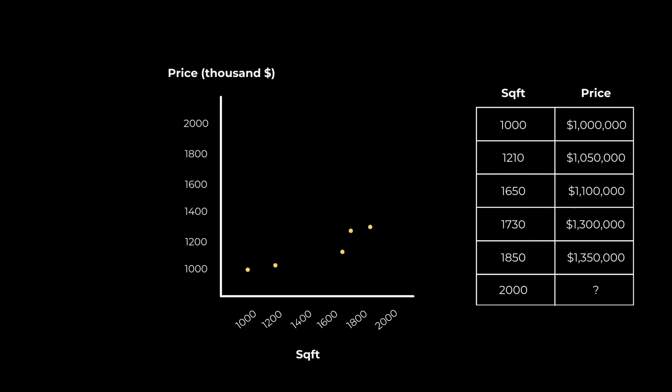To do this, we need to fit a line through our data, like this. This line will help us predict the price at any given square footage. In this case, our price is 2 million dollars for a 2,000 square foot house.